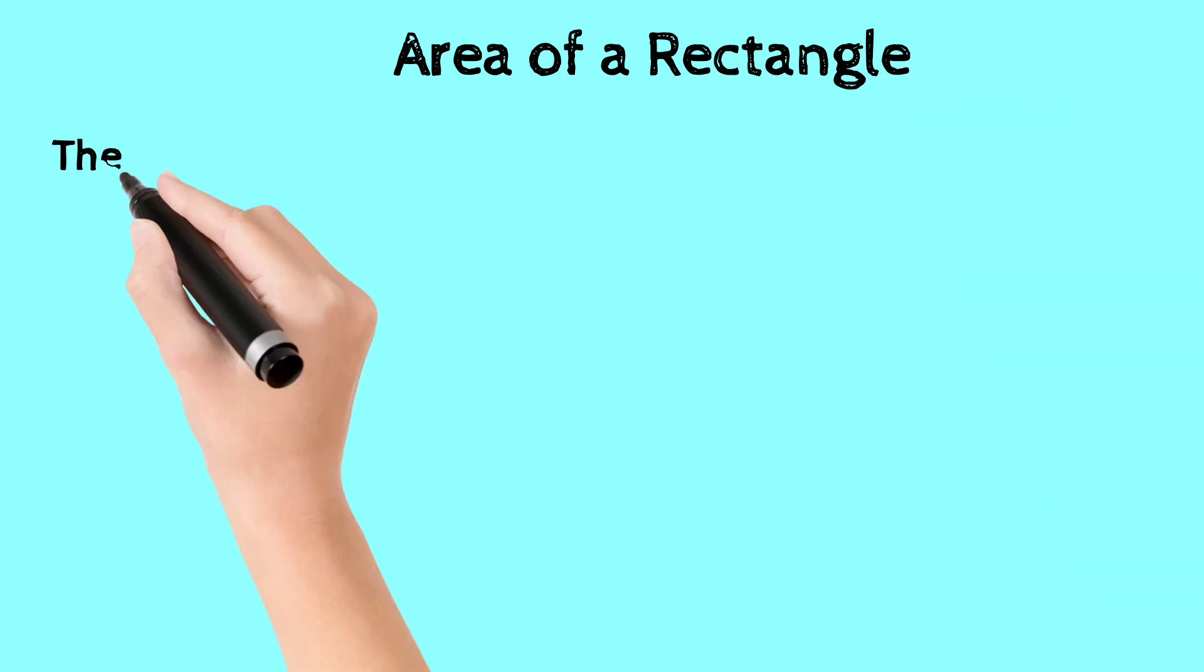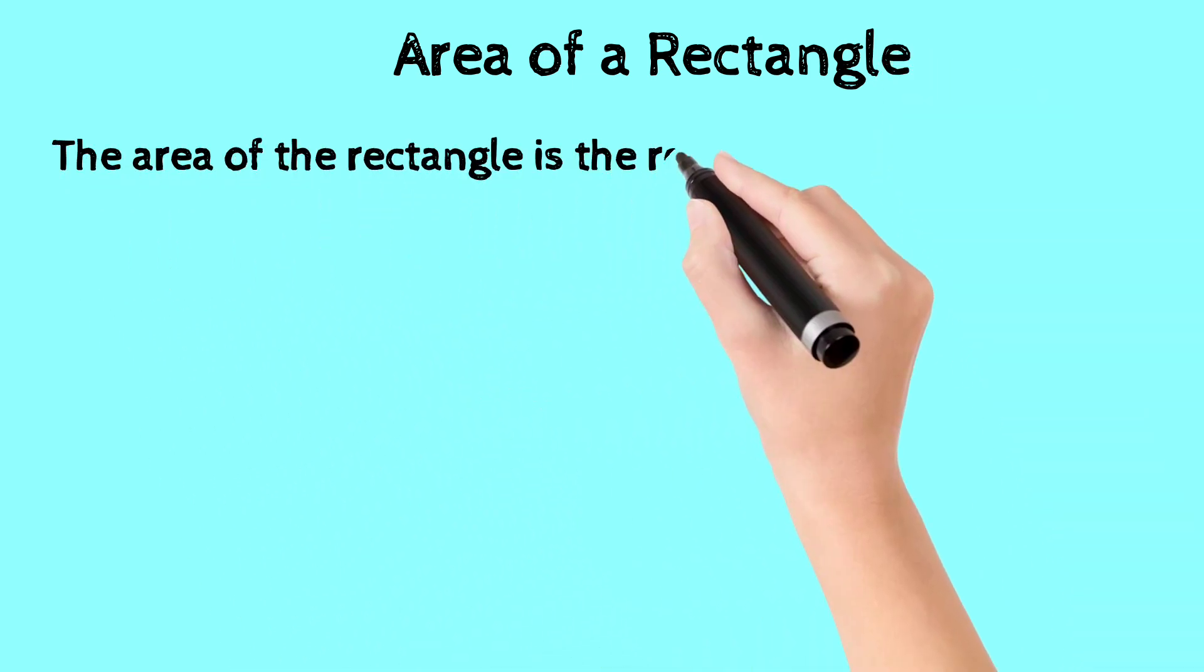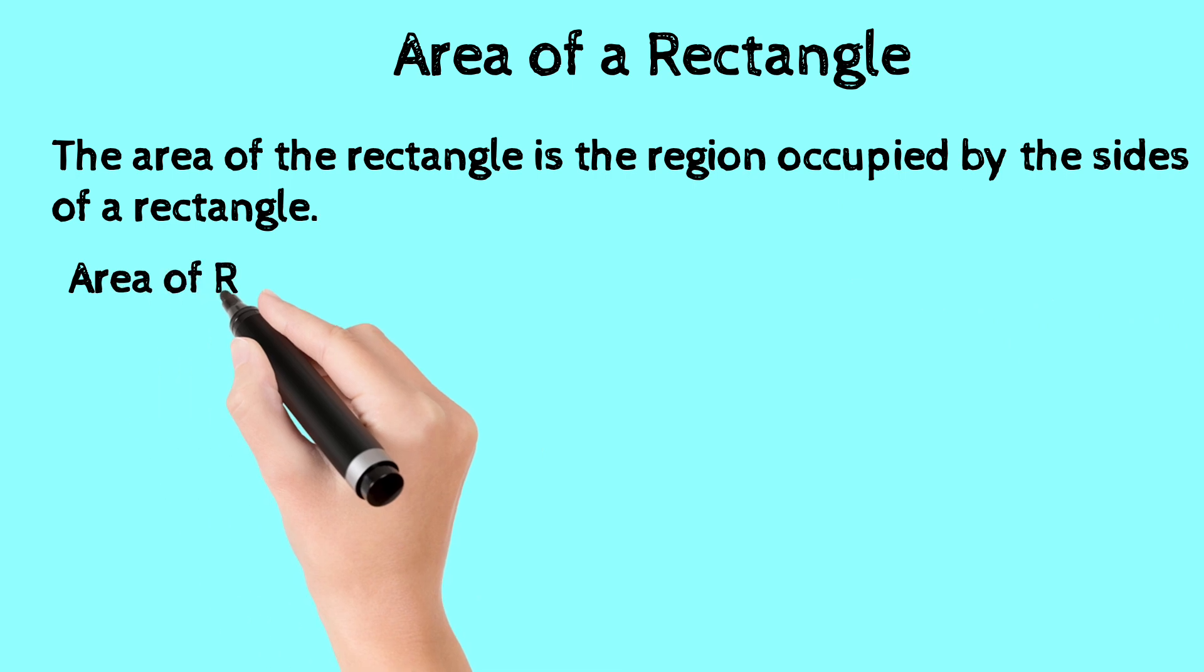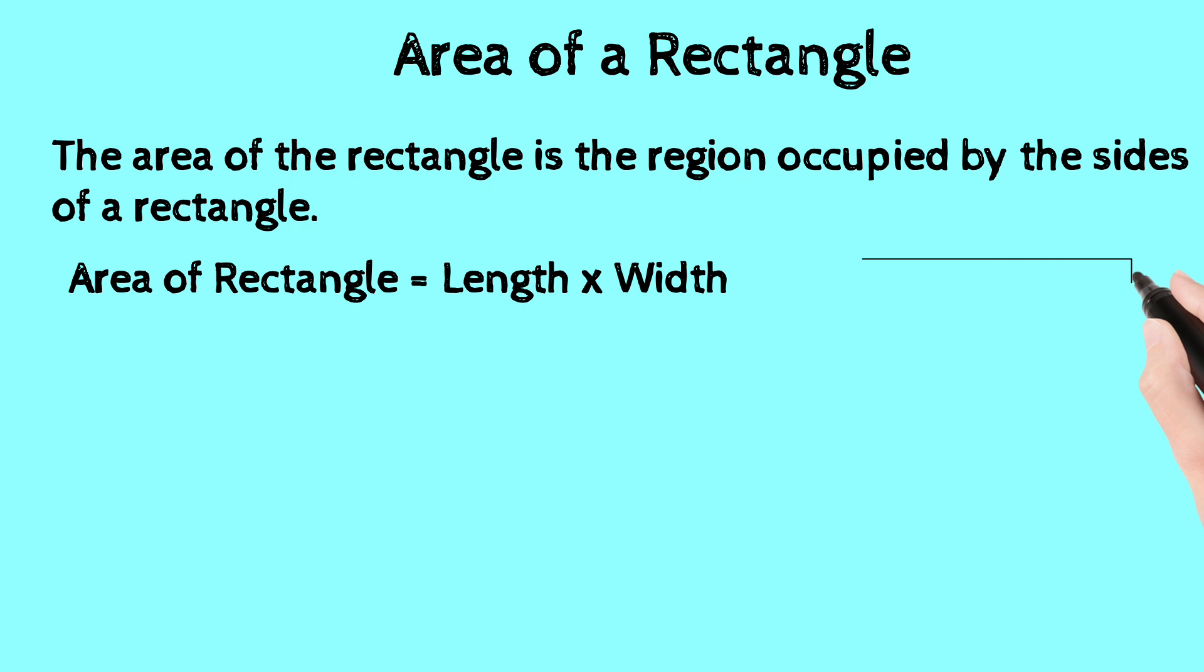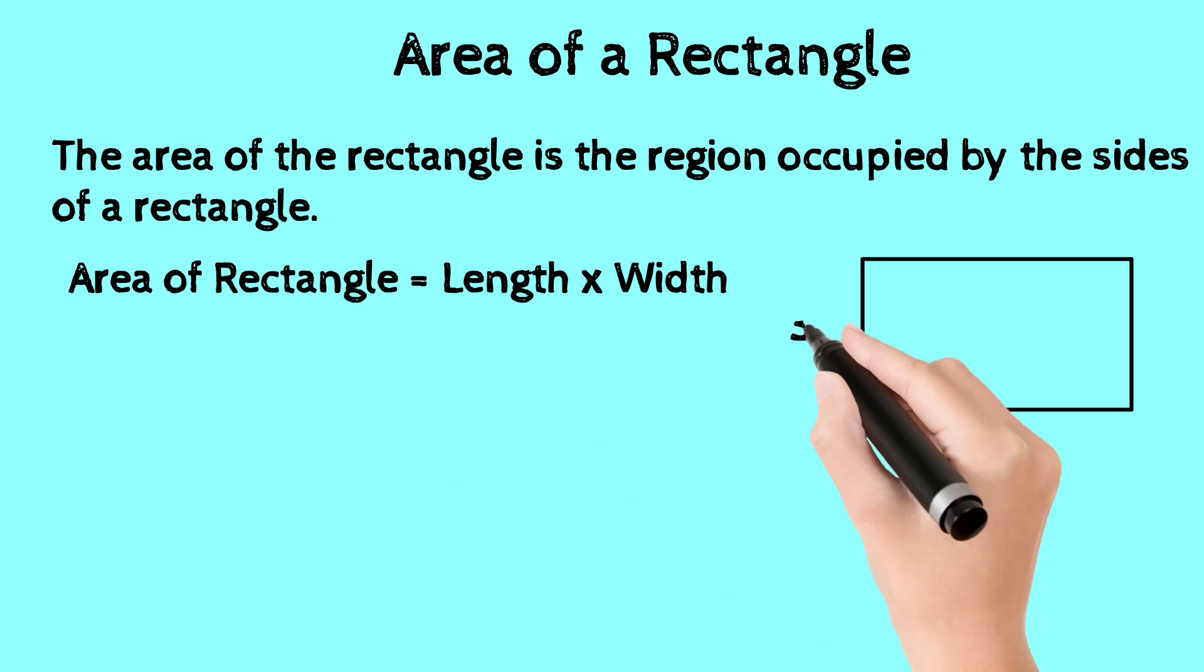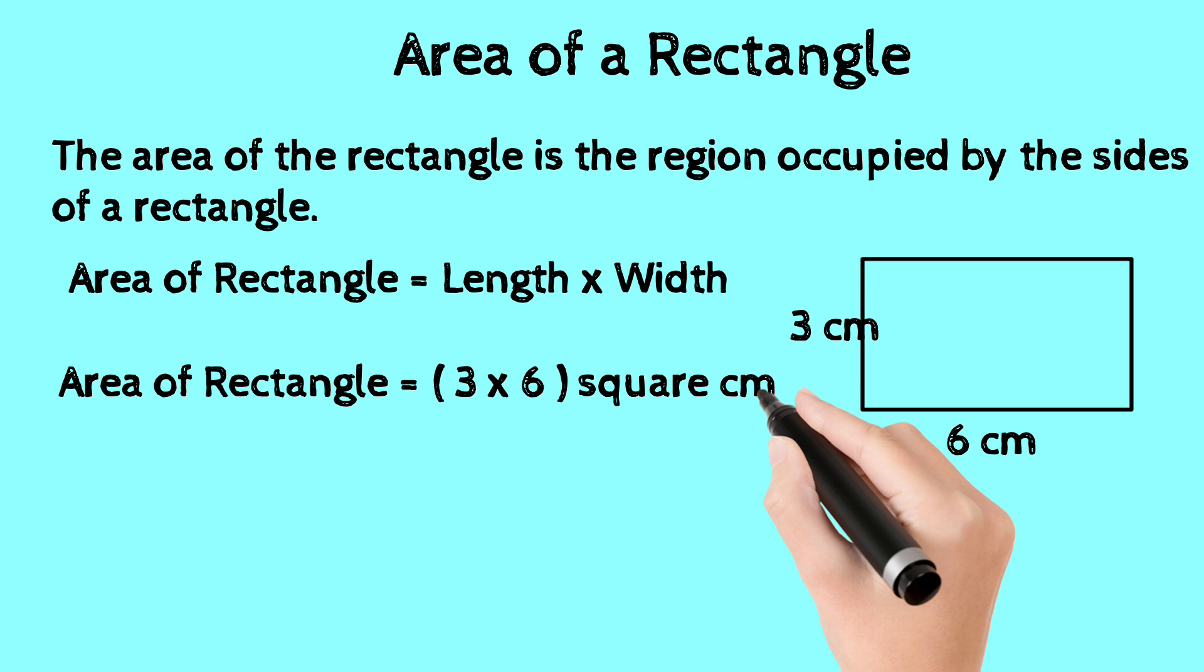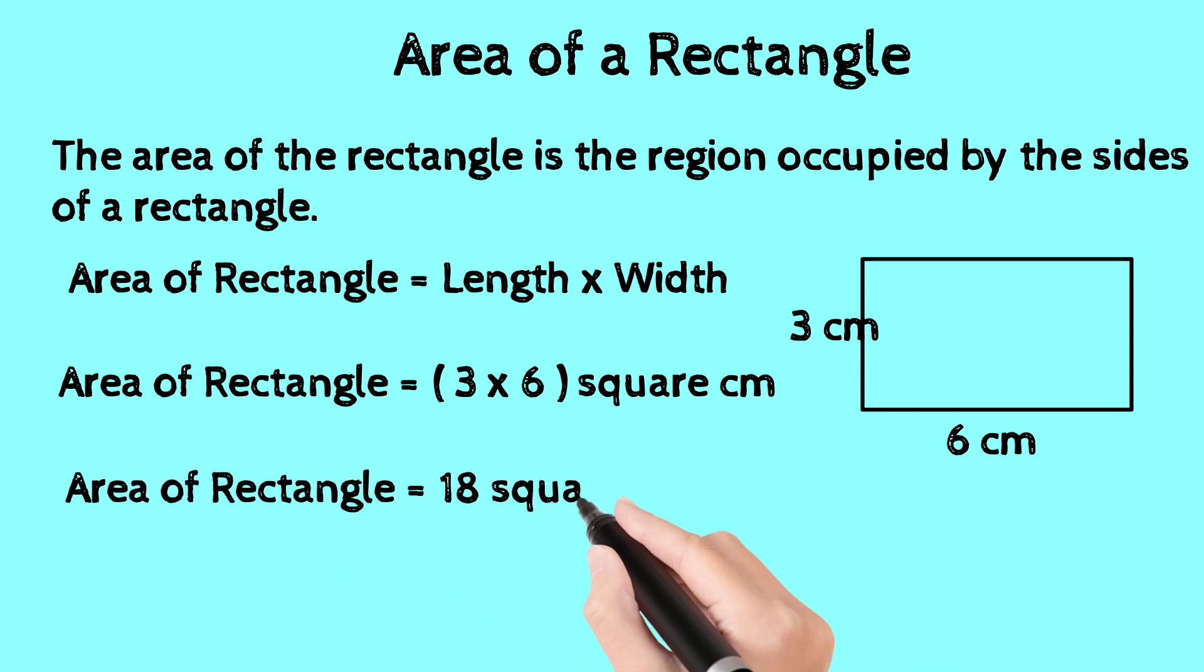Now we find the area of a rectangle. The area of a rectangle is the region occupied by the sides of a rectangle. Area of a rectangle equals length times width. If length is 6 cm and width is 3 cm, then the area is 6 times 3, which equals 18 cm squared.